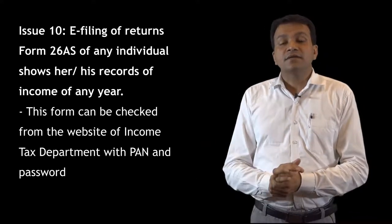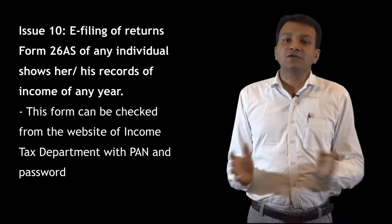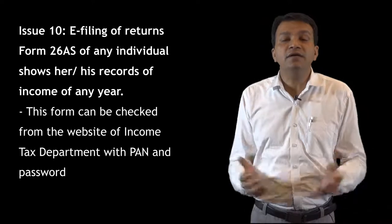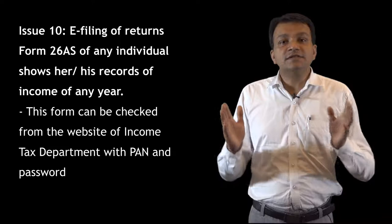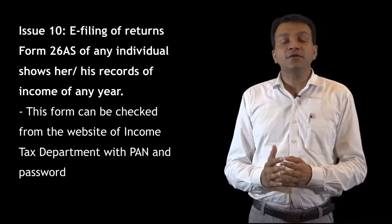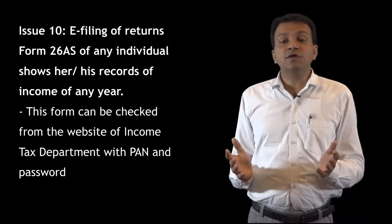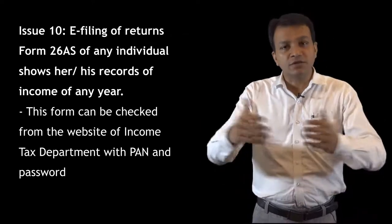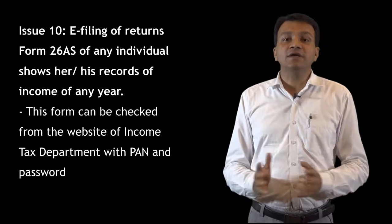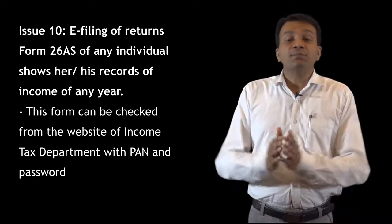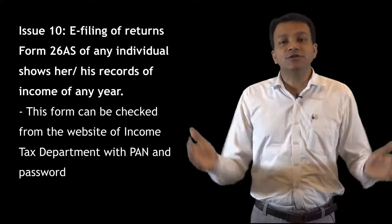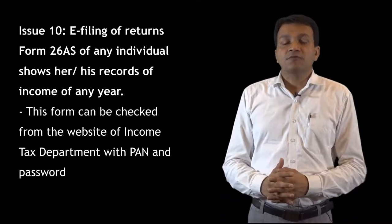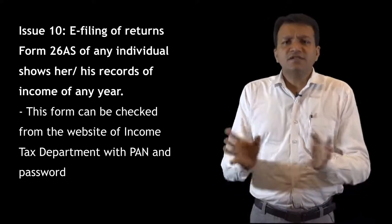Regarding e-filing: the income tax department normally has records of all incomes on which tax has been deducted at source. There is a Form 26AS — those who file their returns themselves can check this form. If you forget some income, Form 26AS will tell you how much income you earned in the year and how much tax was deducted. It is better to first check Form 26AS and match it with income in your own records before filing the return of income for any year.